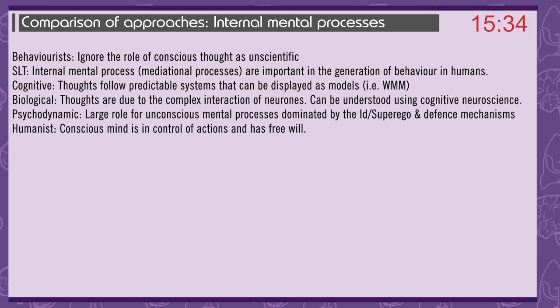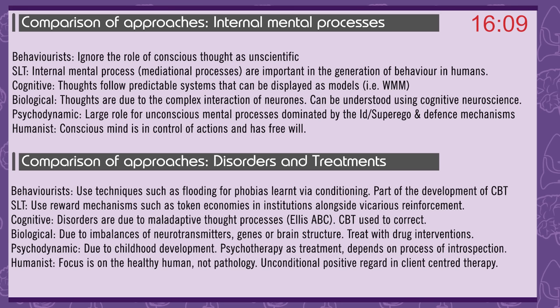Comparison of approaches — internal mental processes: behaviourists ignore the role of conscious thought as unscientific; social learning theory considers mediational processes as important in generating behaviour; cognitive suggests thoughts follow predictable systems displayed as models such as the working memory model; biological suggests thoughts are due to complex interactions of neurons, understood using cognitive neuroscience; psychodynamic gives a large role to unconscious mental processes dominated by the id, superego, and defence mechanisms; and humanism holds that the conscious mind is in control of actions and has free will.